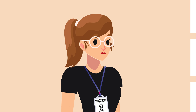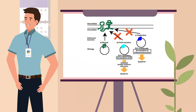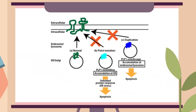So people with Pelizaeus-Merzbacher disease have a problem in their production line? That's right. Patients with PMD have either a duplication, deletion, or point mutations in the PLP1 gene. And that is an error which creates a problem for the oligodendrocytes, and therefore PMD patients have little to no myelin.